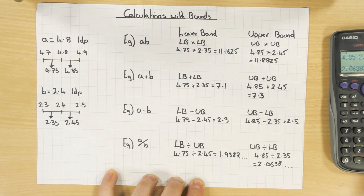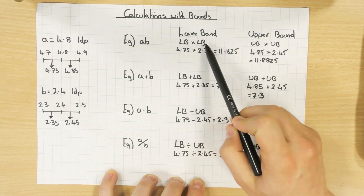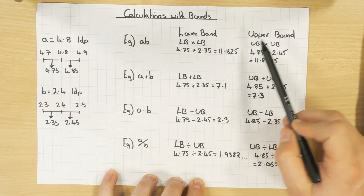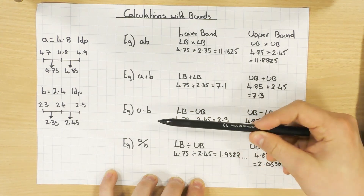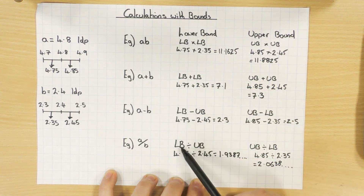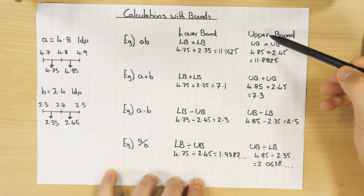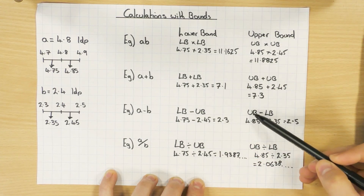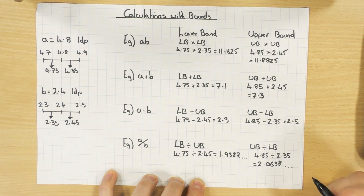To summarise: for multiplication and addition, lower bound uses lower × lower or lower + lower; upper bound uses upper × upper or upper + upper. For subtraction and division, be careful: lower bound of the calculation = lower bound ÷ or − upper bound; upper bound of the calculation = upper bound ÷ or − lower bound. Remember that and you should be able to do any calculation using bounds.